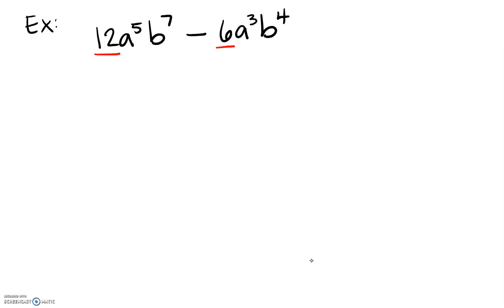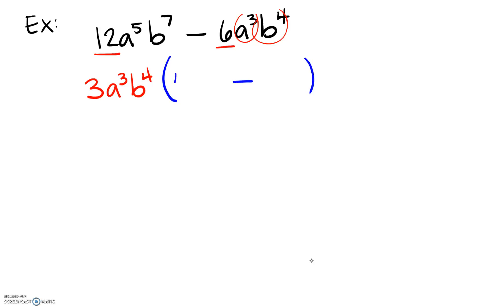Let's intentionally make a mistake to see what happens. If we incorrectly choose 3 as the GCF instead of 6: the smallest exponent on a is 3 (a cubed) and the smallest exponent on b is 4 (b to the fourth), so our incorrect GCF is 3a cubed b to the fourth. Dividing through gives 3a cubed b to the fourth times the quantity 4a squared b to the third minus 2. We should recognize we've made a mistake because the two terms inside the parentheses, 4a squared b cubed and 2, still share a common factor of 2.